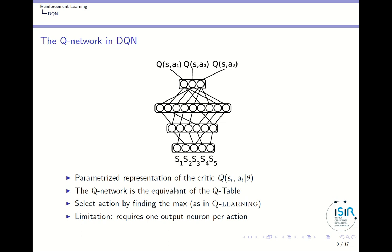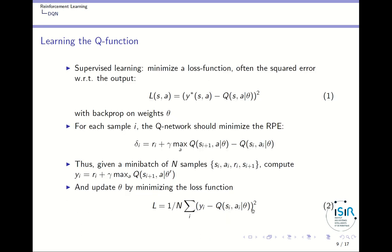A limitation is that this requires one output neuron per action, so you cannot do this with a continuous action domain. We will see in a later class how DDPG goes around that particular limitation.